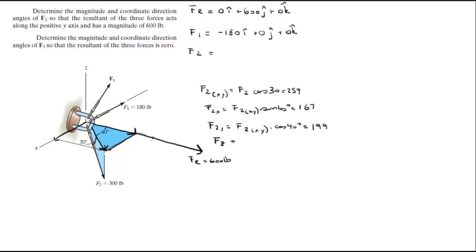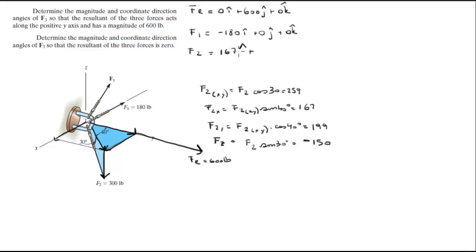The z component is found by doing F2 sine of 30 degrees, and it's negative because it's going down on the z-axis, so it's negative 150. So F2 equals 167 i plus 199 j minus 150 k.